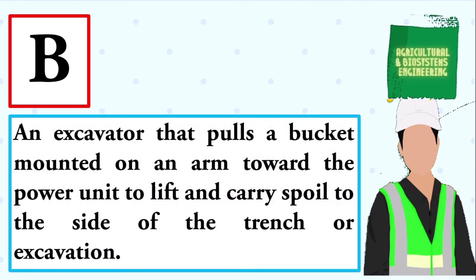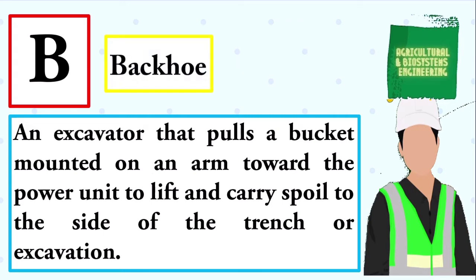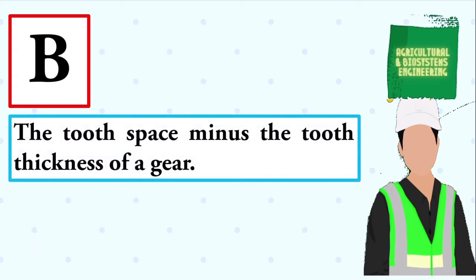An excavator that pulls a bucket mounted on an arm toward the power unit to lift and carry spoil to the side of the trench or excavation. The answer is: backhoe. The tooth space minus the tooth thickness of a gear. The answer is: backlash.